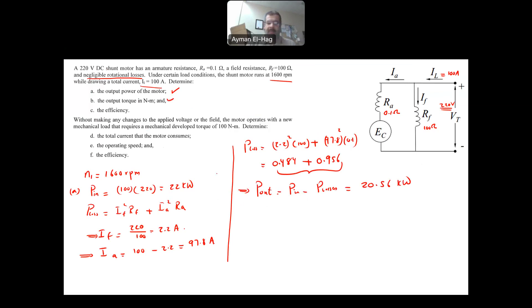What is the output torque? Now, the torque, this is part B. The Pout is equal to the torque output times omega. Omega is the speed, which we know it. I know Pout, so from this, we can find the output torque is equal to Pout, which is 20.56 times 10 to the power of 3, divided by 2 pi over 60 to convert that 1600 into radian per second. So if you do that, you will find this is equal to 122.7 Newton meter.